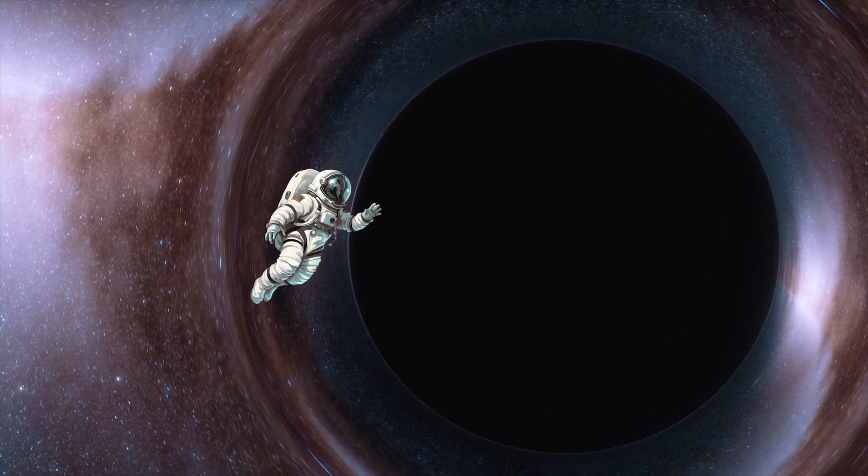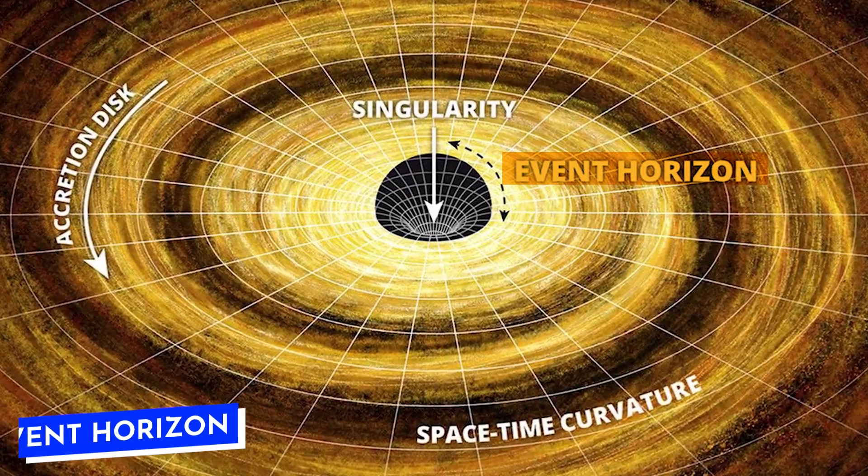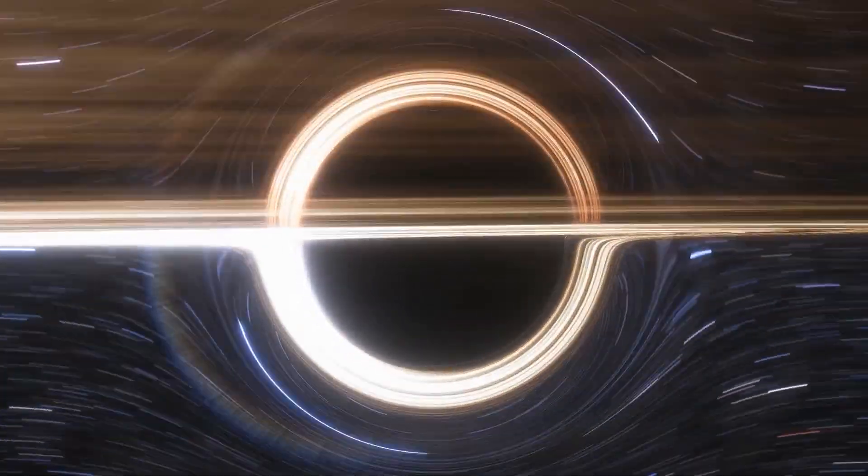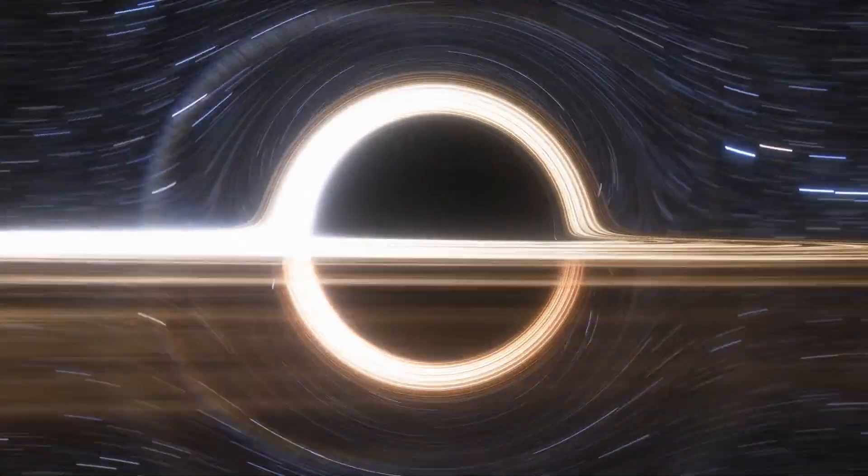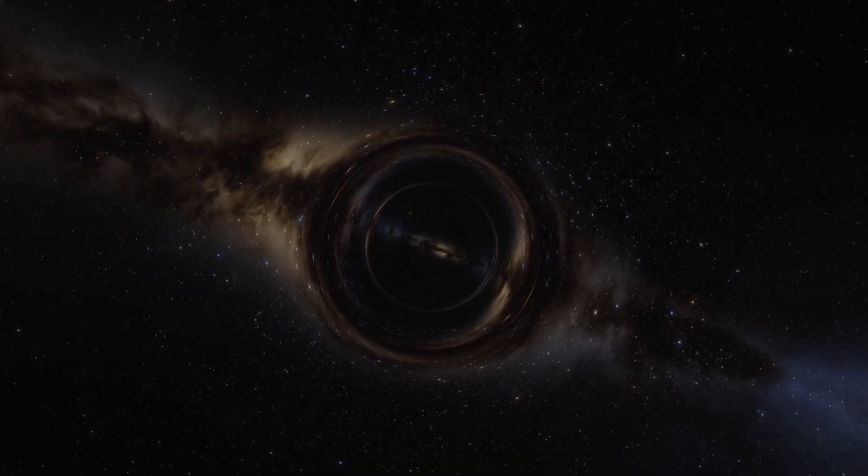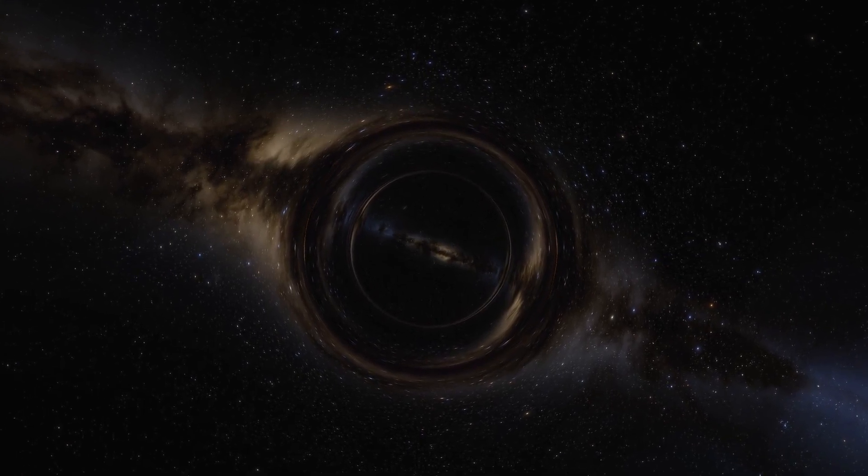Now, imagine you're standing at the edge of a black hole, a place called the event horizon. Here, gravity is so strong that nothing, not even light, can escape. That's why we can't see black holes directly. They're literally too strong for light to get out.